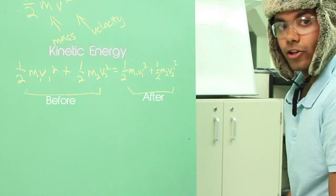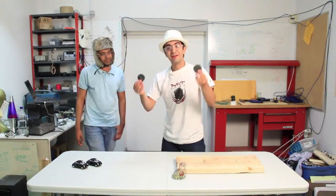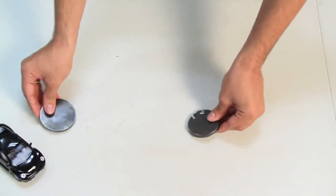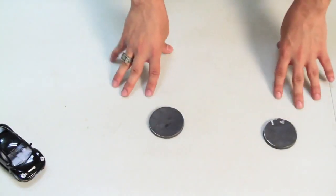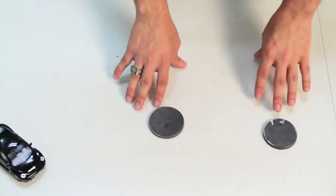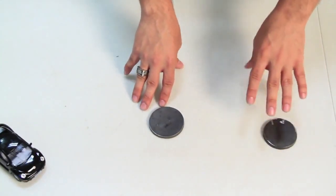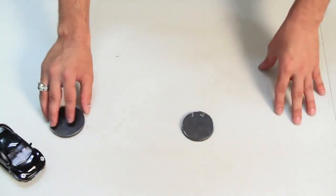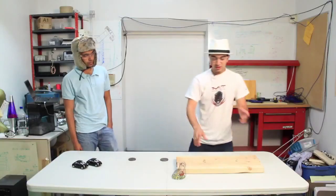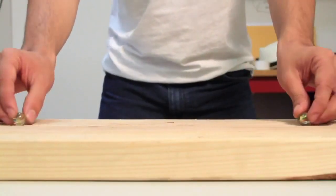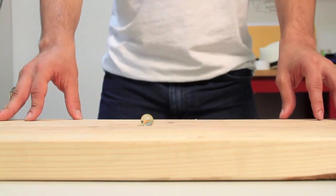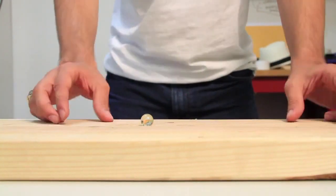Let's do some more examples in real life. Here we have two steel disks — this is object 1 and this is object 2. As we can see, object 1 stayed roughly in the same location after the collision, and object 2 moved at roughly the same velocity as object 1 before the collision. Let's look at another example: here we have two marbles colliding into each other. The marbles bounce off each other at roughly equal and opposite velocities, signifying an elastic collision.